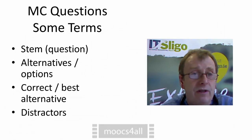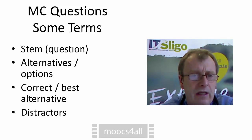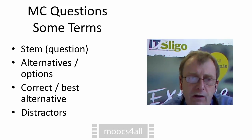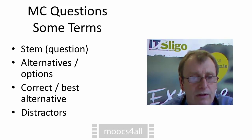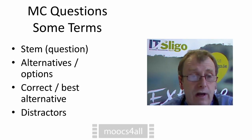Let's have a look at some terms that are used in multiple choice questions. The question posed to the student is called the stem. Often it's not a question — it can be a partial sentence which is completed later in the question. What the learner selects from are called the options or the alternatives. In a multiple choice question, the one they're awarded marks for would be the correct or best alternative, and the ones they don't get marks for are called the distractors.